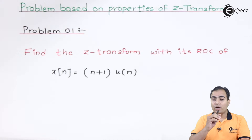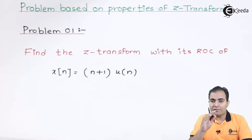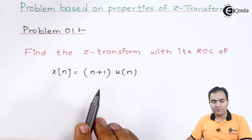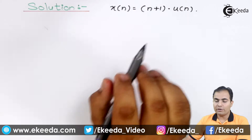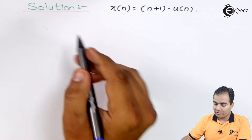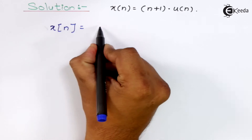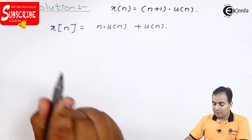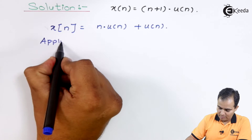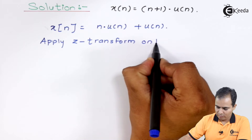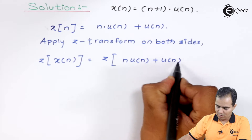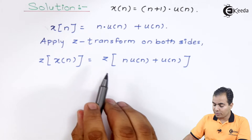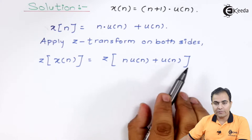n·u(n) means we have to use the differentiation property, so we'll differentiate u(n) only once because we have only n there, and then plus u(n), whose Z-transform we can find directly. Now applying the Z-transform on both sides and using the linearity property, we can obtain the Z-transform of n·u(n) and u(n) separately.